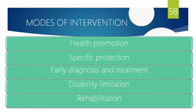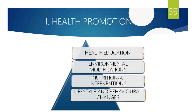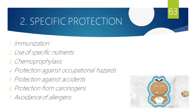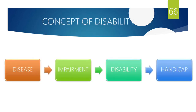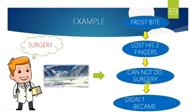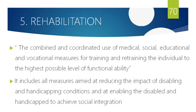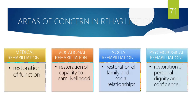In summary, modes of intervention include: health promotion — covering health education, environmental modification, and nutritional and behavioral changes; specific protection — immunization and protection against accidents and carcinogens; secondary prevention — early diagnosis through active screening; and tertiary prevention — disability limitation stopping the impairment-to-handicap transition, followed by medical, vocational, social, and psychological rehabilitation. This concludes the topics of concept of disease causation, concept of prevention, and modes of intervention in prevention.